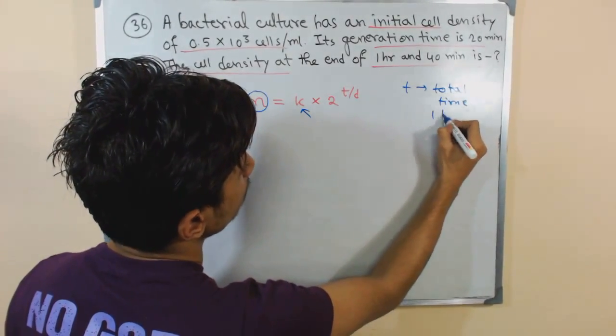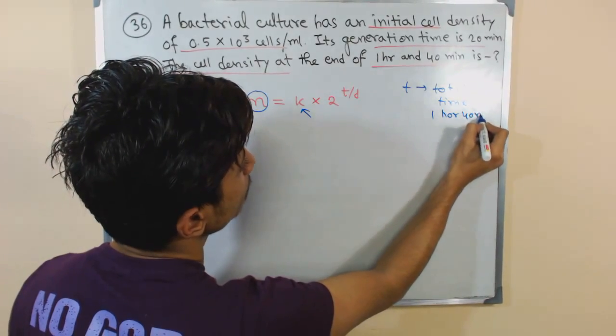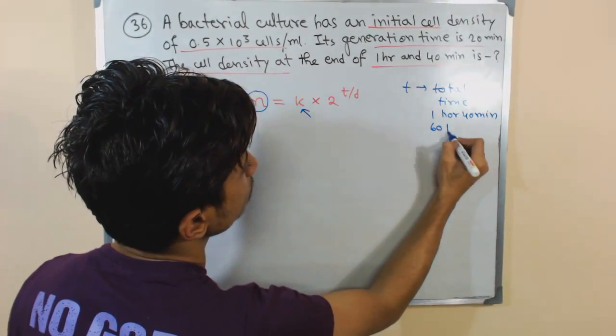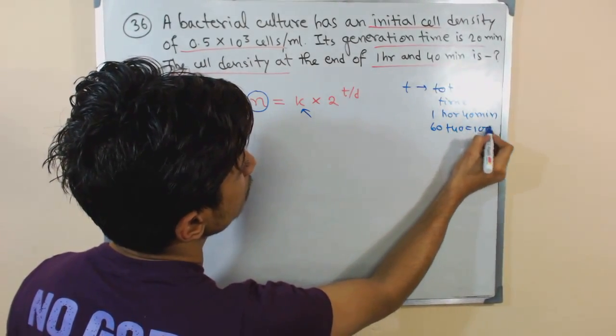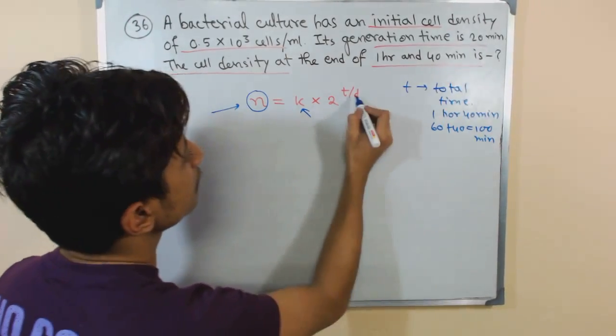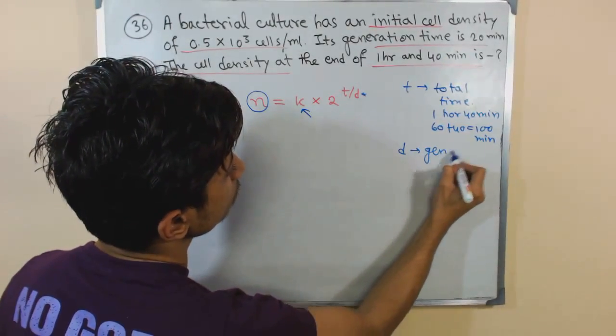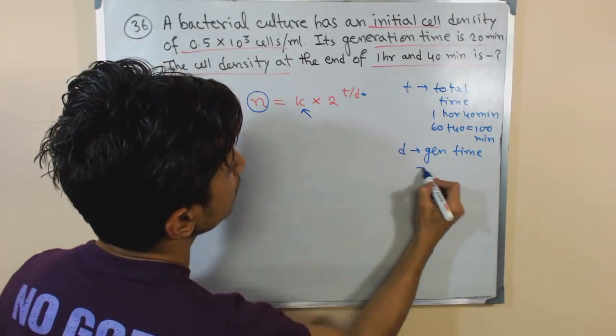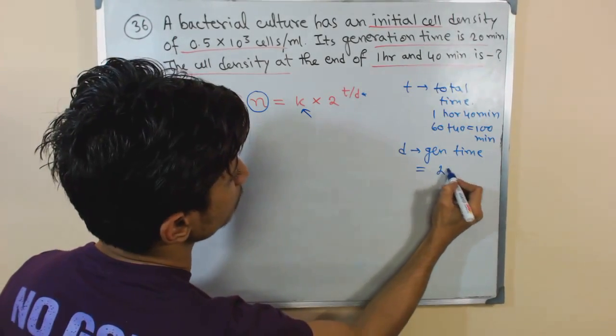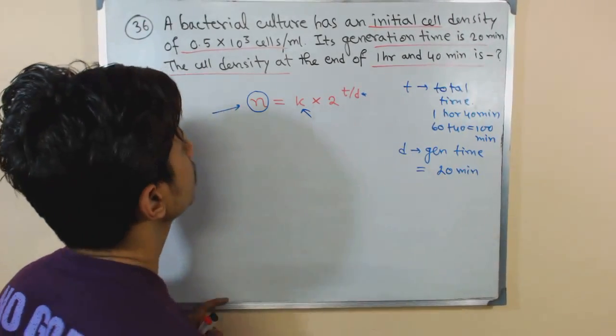And this T, small t, stands for the total time duration which is one hour forty minutes. Remember one hour is sixty minutes, so sixty plus forty equals hundred minutes, right?